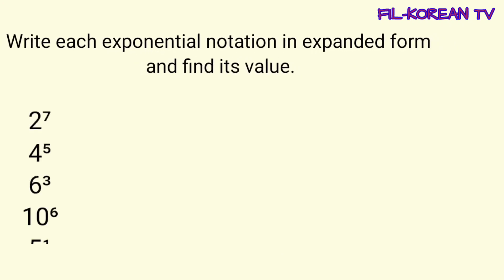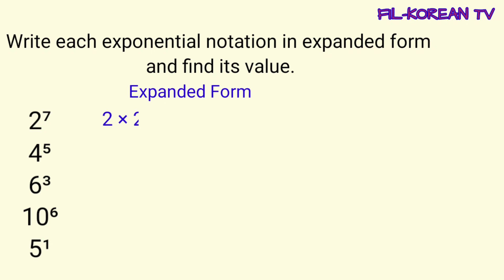Now, let's answer this activity. Write each exponential notation in expanded form and find its value. Number 1, 2 to the 7th power. It means that we will use 2 as a factor 7 times. So, the expanded form is 2 times 2 times 2 times 2 times 2 times 2 times 2.